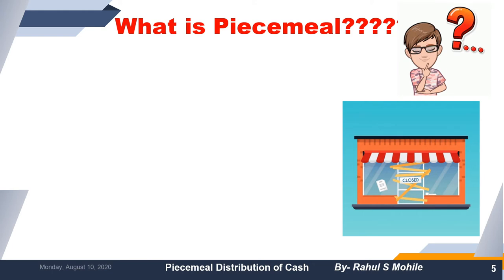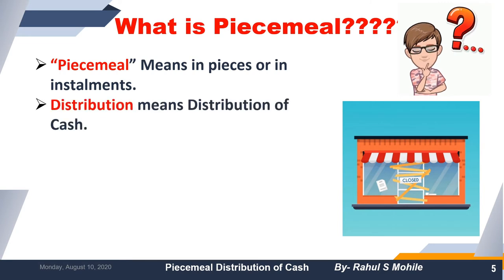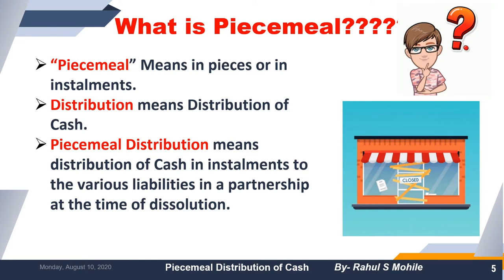The question arises: whom to pay first and whom to pay second — which liability holders get priority. Piecemeal means in pieces or installments; we will pay our liability holders in installments as cash comes in from realization. Distribution means dividing — we will distribute the cash to our liabilities as they become due, and the remaining amount at the end will be distributed among partners.